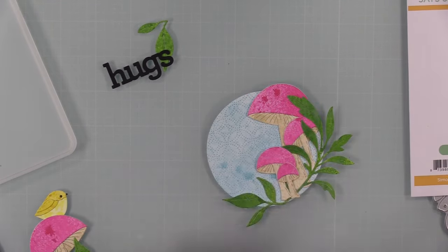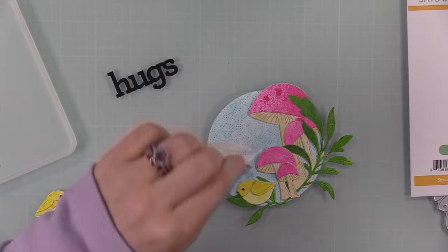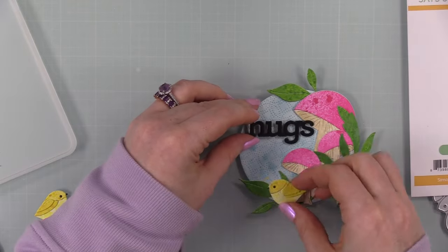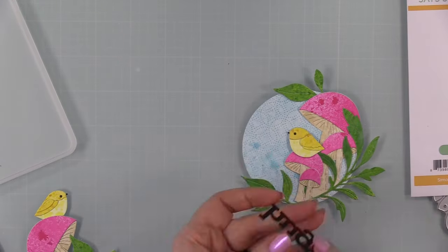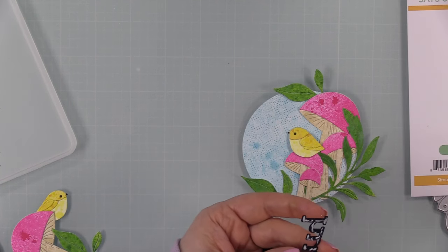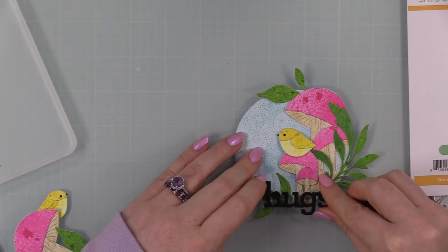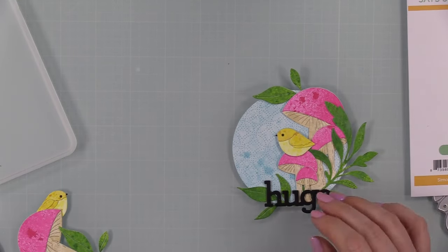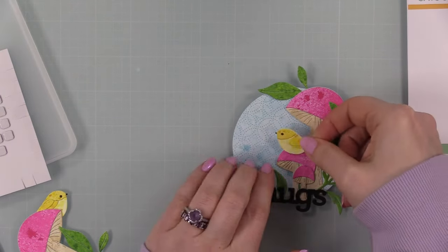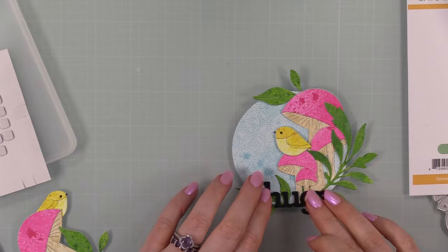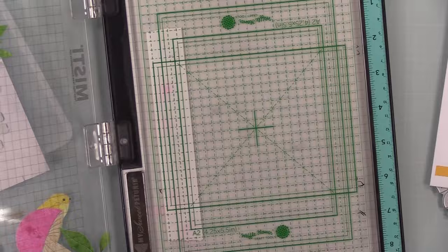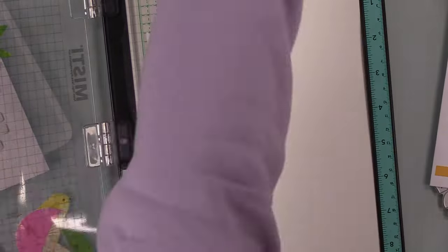I was originally going to have the bird kind of lower down and then have the sentiment a little higher up, and then I changed my mind last minute. I was like, oh no, I want the bird to be sitting on one of these mushrooms because he's just little and cute. So the sentiment I adhered along the bottom of this circle, and then the little bird I'm going to add a couple of thin foam squares to, because I've got a fair bit of dimension going on just with the layers of the die cuts themselves. Got that into place and then I've got a couple extra mushrooms.